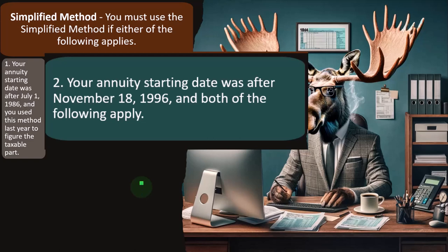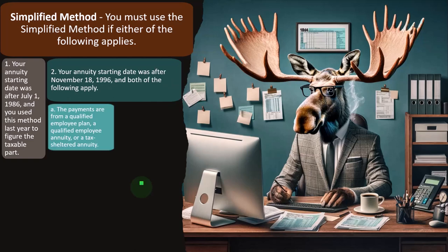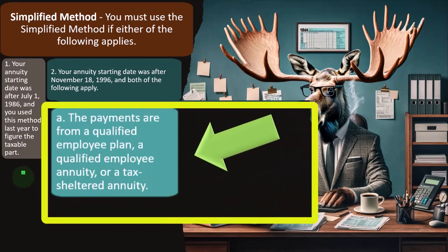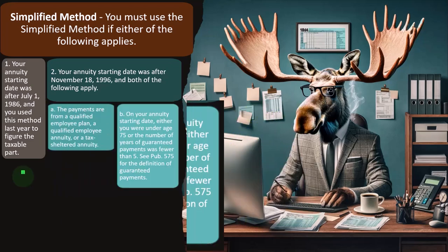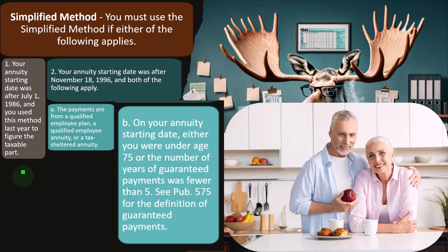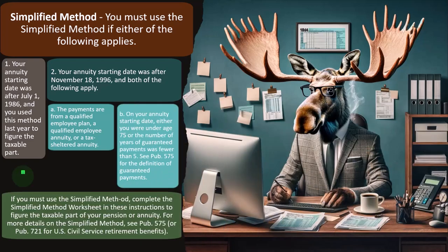Number two, your annuity starting date was after November 18th, 1996, and both of the following apply. A: the payments are from a qualified employee plan, a qualified employee annuity, or a tax-sheltered annuity. B: on your annuity starting date, either you were under age 75 or the number of years of guaranteed payments was fewer than five. See Publication 575 for the definition of guaranteed payments.